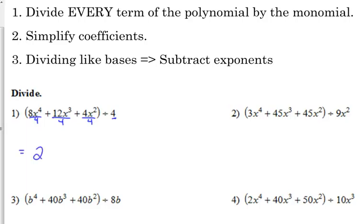So 8 divided by 4 is 2, and we can't do anything with the x to the fourth. 12 divided by 4 is 3. We can't do anything with the x cubed, and 4 divided by 4 is 1, so then we just have plus x squared there on the end.